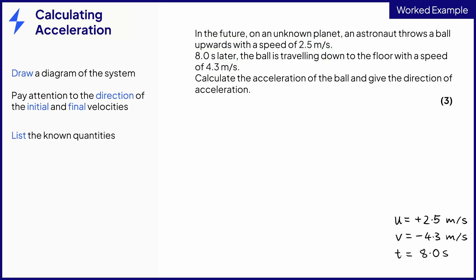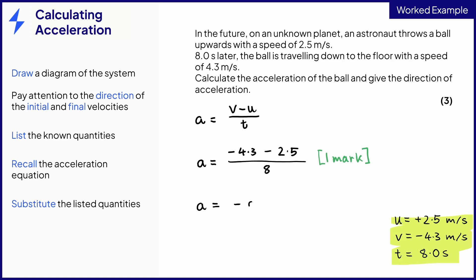Now that we've got the correct signs on our velocities, the rest of the question is easy. We recall the equation a equals v minus u over t, and substitute in the values from before. Putting these into the equation gains the first mark. Just put that into a calculator, include your units for acceleration, and you get a second mark.